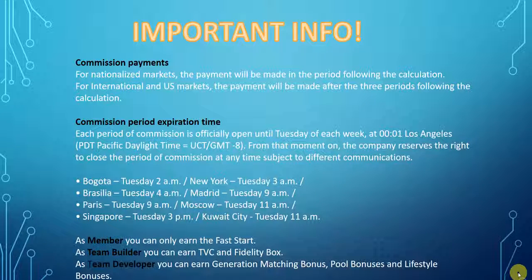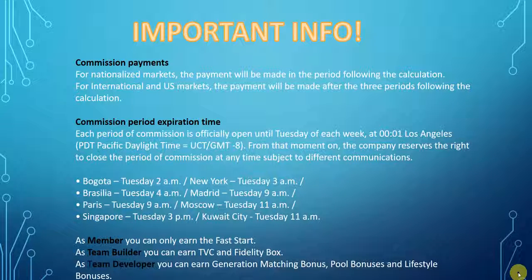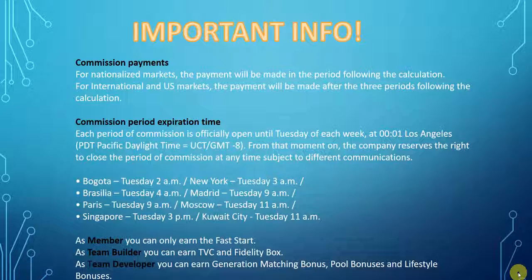Commission period expiration time: each commission period officially opens Tuesday morning at one minute after midnight, Pacific Coast time, USA, and closes on Monday night at midnight each week. As a member, you can only earn fast start bonuses. Once you become team builder, you can earn the binary pay or TVC and the fidelity box. And once you hit team developer, you earn the generational matching bonuses, the pool bonuses, and the lifestyle bonuses — so you see why it's so important to hit team developer.